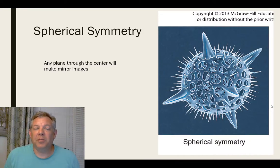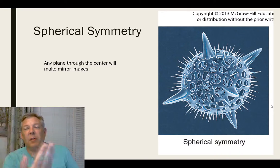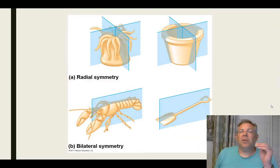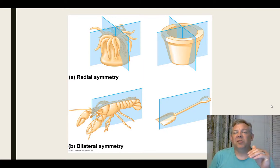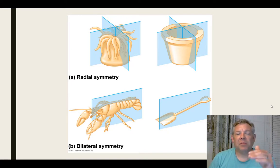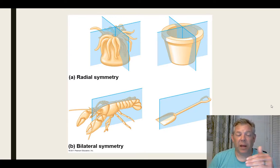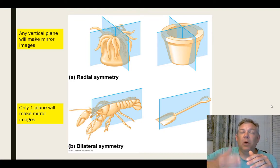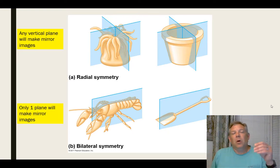Here is an example of spherical symmetry — if you take a plane, no matter what orientation, if it goes through the center, you're always going to make mirror images. At the top is an example of radial symmetry: these objects have a clearly identifiable top and bottom, but no left and right. With radial symmetry, any vertical plane will make mirror images, so you have an infinite number of vertical planes. With bilateral symmetry, there's only one vertical plane that will make mirror images.